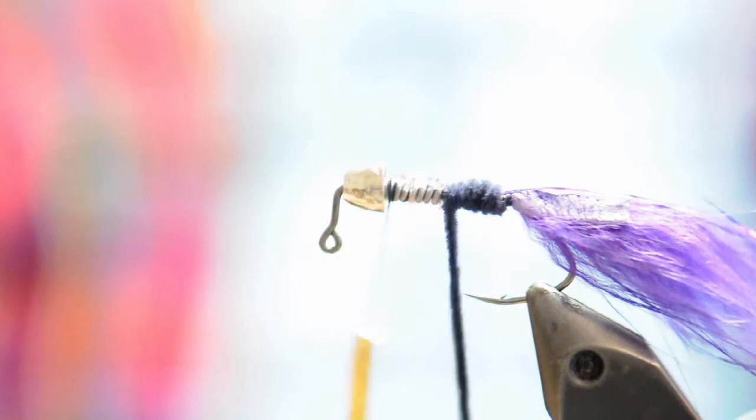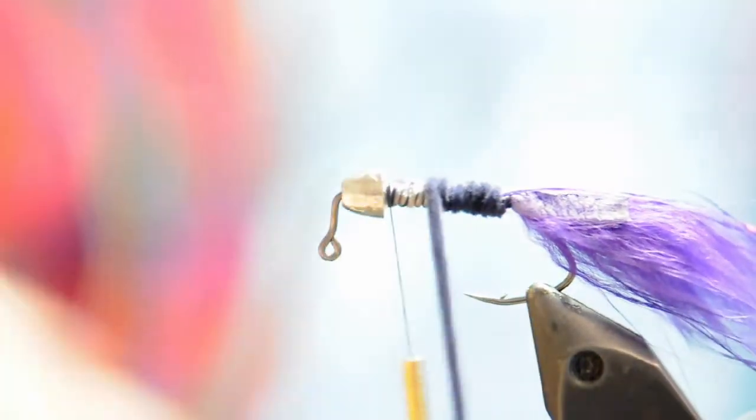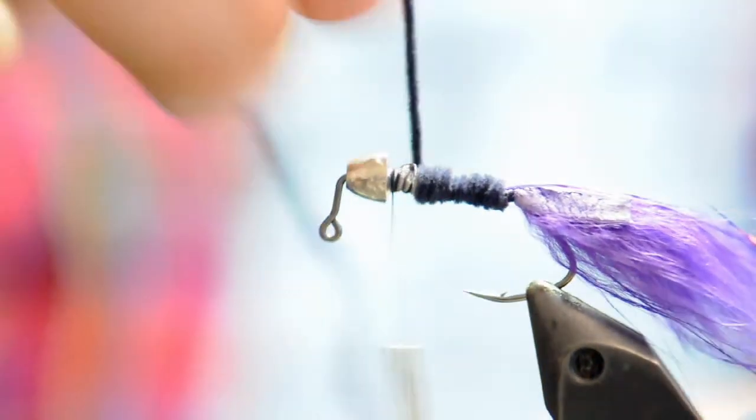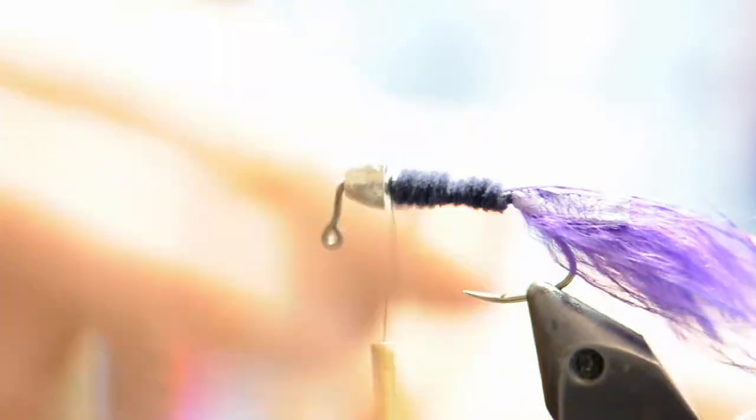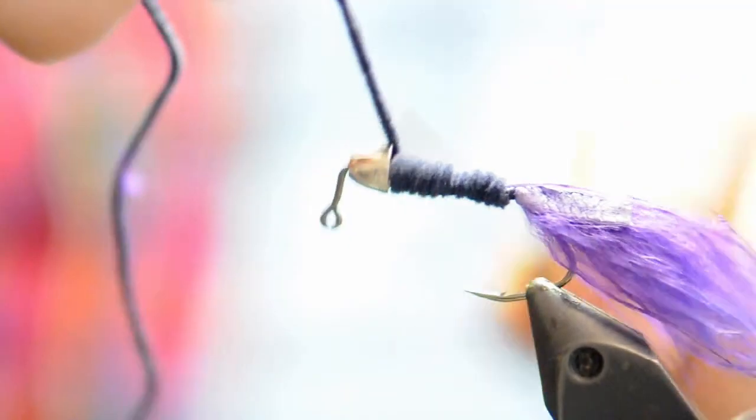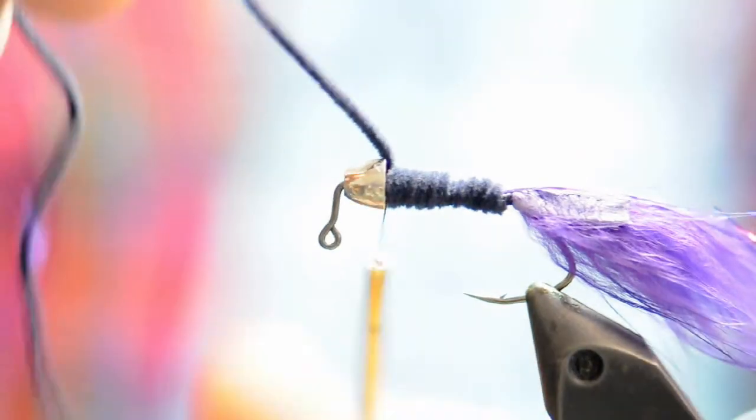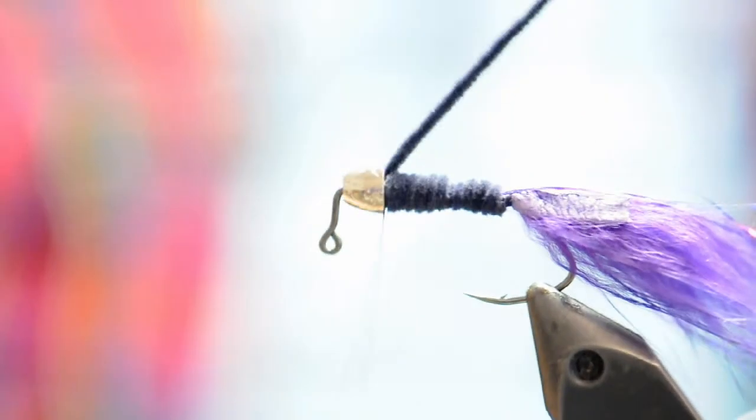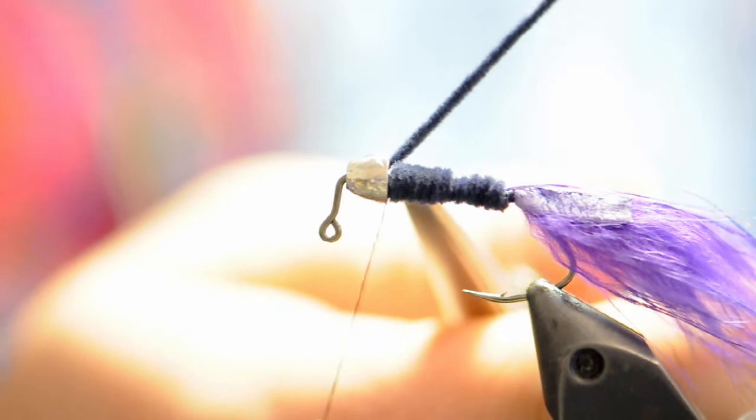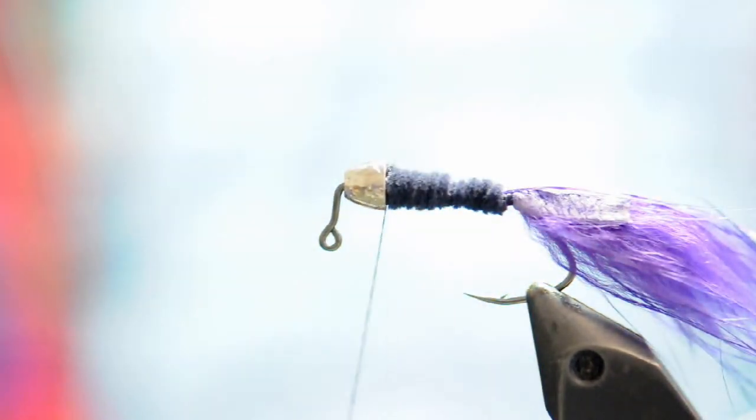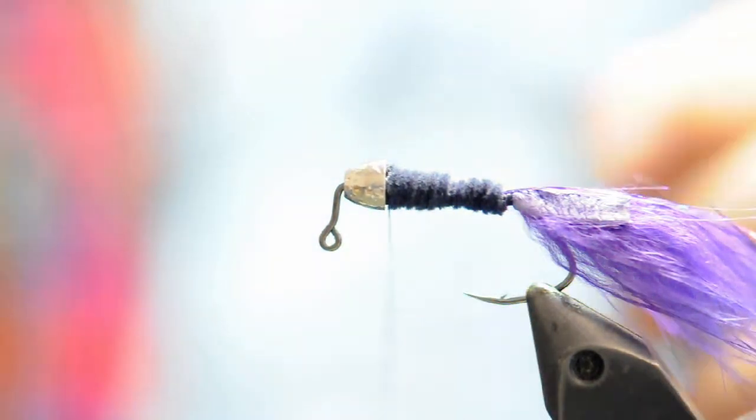In particular a lot of times this fly is banged against rocks and so this helps with the longevity. So we'll just wrap our Ultra Chenille forward and I'll wrap up to the cone but I won't pack the Ultra Chenille right behind the cone. I want a little bit of a gap there so that when we veil our laser dub over this part of the fly there's actually a gap that the thread can pull the laser dub into.